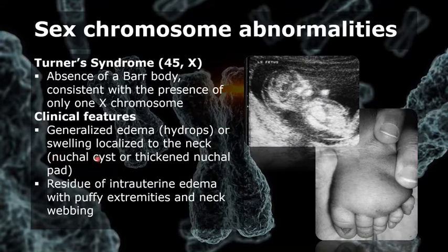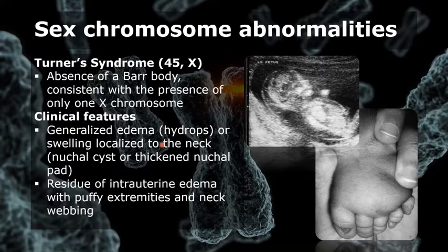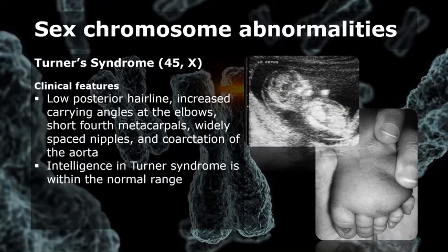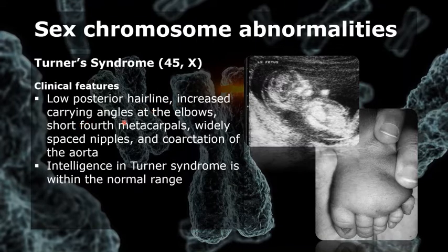At birth, many babies with Turner syndrome look entirely normal. Others show the residue of intrauterine edema with puffy extremities and neck webbing. Other findings also include a low posterior hairline and increased carrying angles at the elbow.